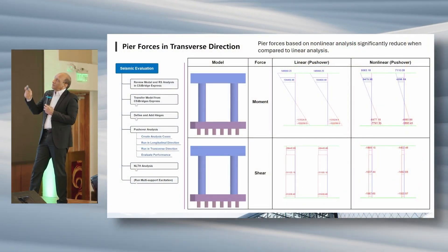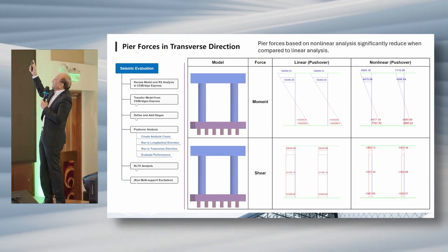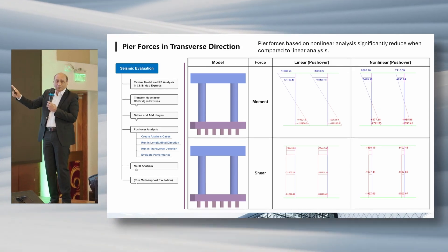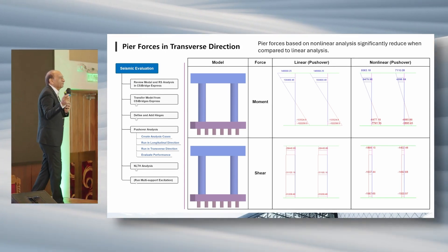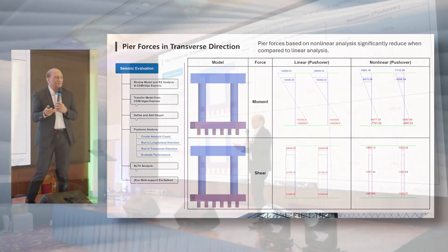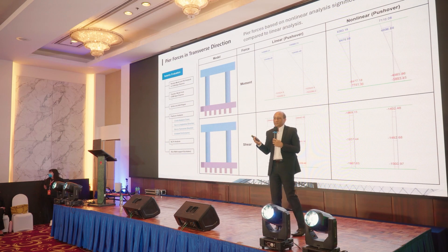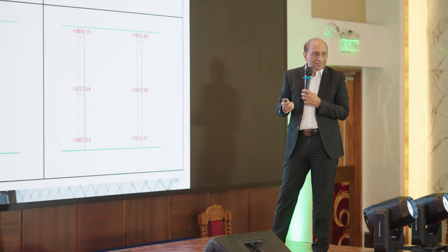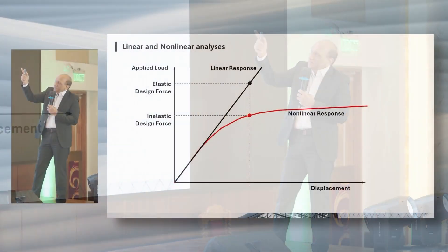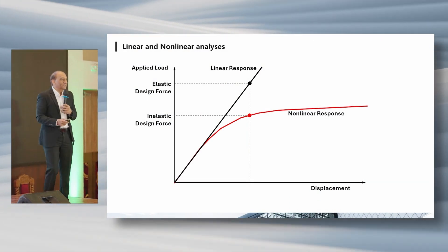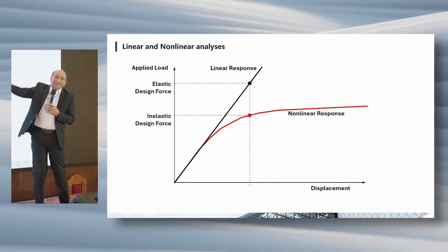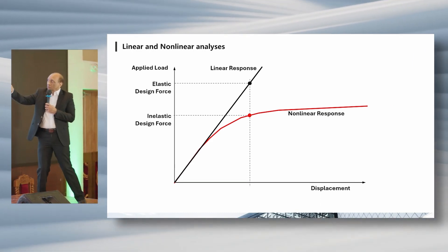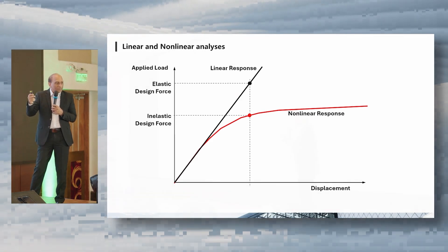We have the non-linearity defined so we can now compare: moment has reduced significantly from linear to non-linear, and shear has also reduced significantly from linear to non-linear. You can easily see the non-linearity benefit — how much it helped reduce the base shear and column shear, which is what we want since we don't want column shear failure. The red pushover line is now available alongside the linear response spectrum line, so we can compare linear versus non-linear.